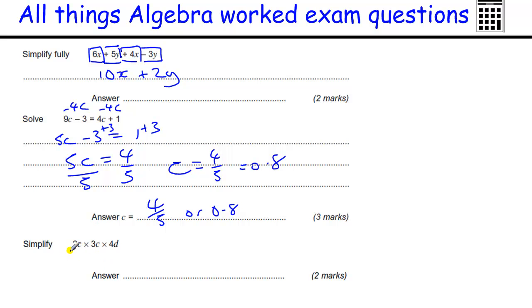Simplify this. So we're doing 2 times 3 times 4. 2, 3 is 6, times 4 is 24. C times C is C squared, and we've just got a D on the end.